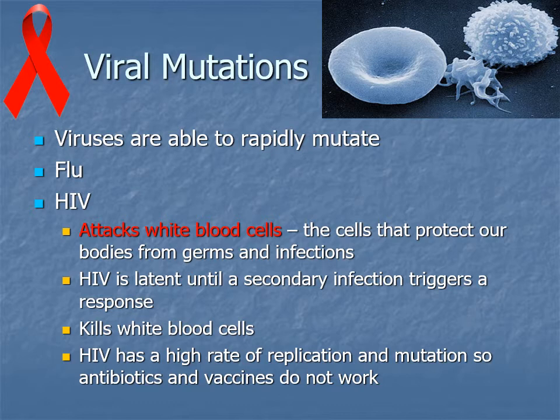We don't have vaccines for HIV or the common cold because those viruses mutate even more rapidly. The coronavirus isn't mutating that quickly, so vaccines will probably keep working against it. They're working on new approaches to create an HIV vaccine, and with advances in technology and vaccine production speed, an HIV vaccine is a possibility down the road.